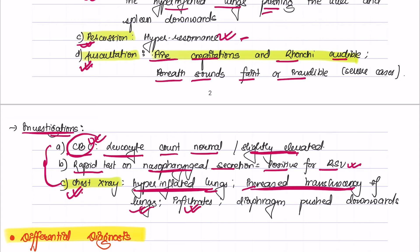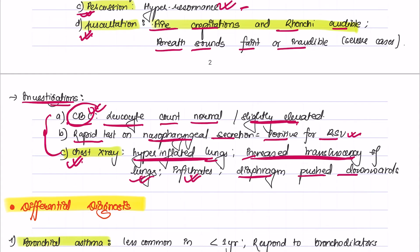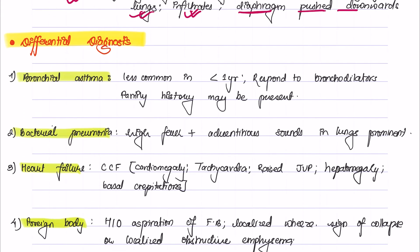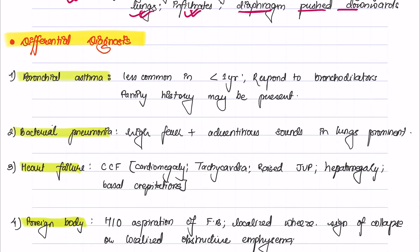The differential diagnosis of bronchiolitis can be either bronchial asthma, bacterial pneumonia, heart failure, and foreign body. Bronchial asthma is usually less common in infants or children below one year of age. The children usually respond to bronchodilators and there may be family history of bronchial asthma.